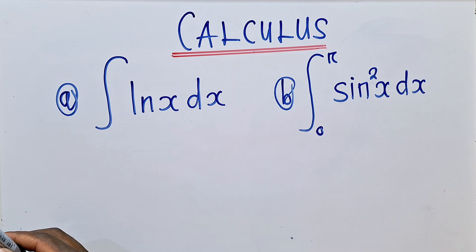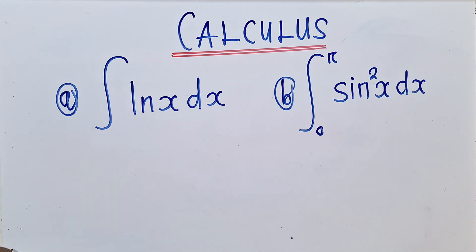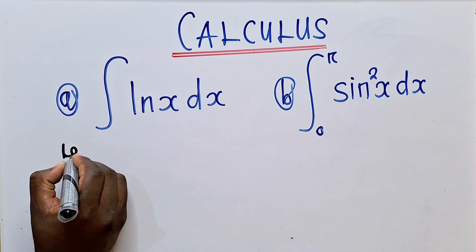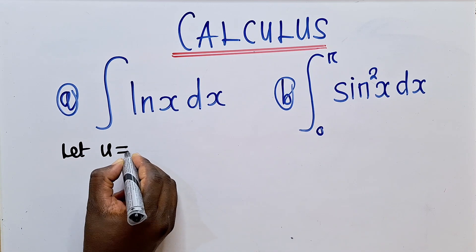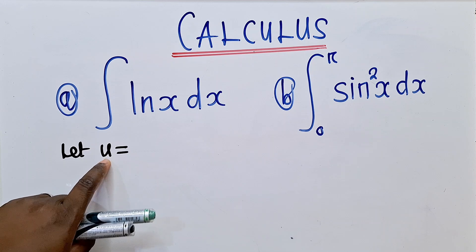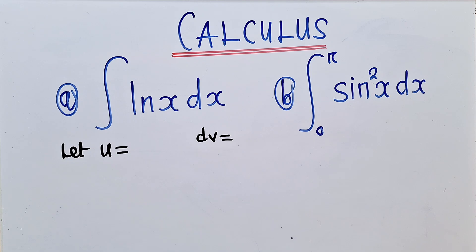The first question to be answered: we need to understand that we're supposed to use the by-parts method. If you want to integrate this, you need to use the by-parts method. What I can advise you, if you meet a question like this, you just say let u. So you just let u be equal to — you want to find your u and your dv. That's the first two things you need to identify.